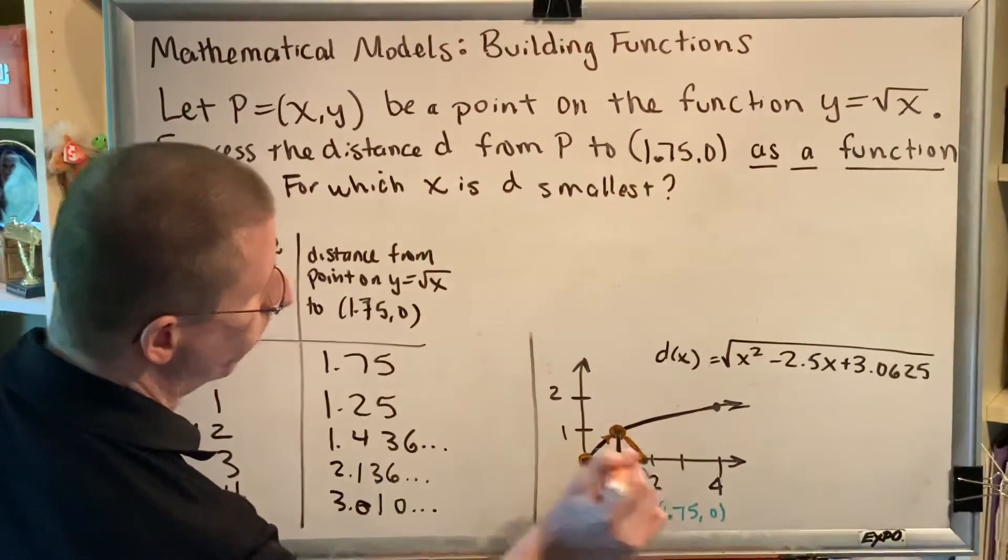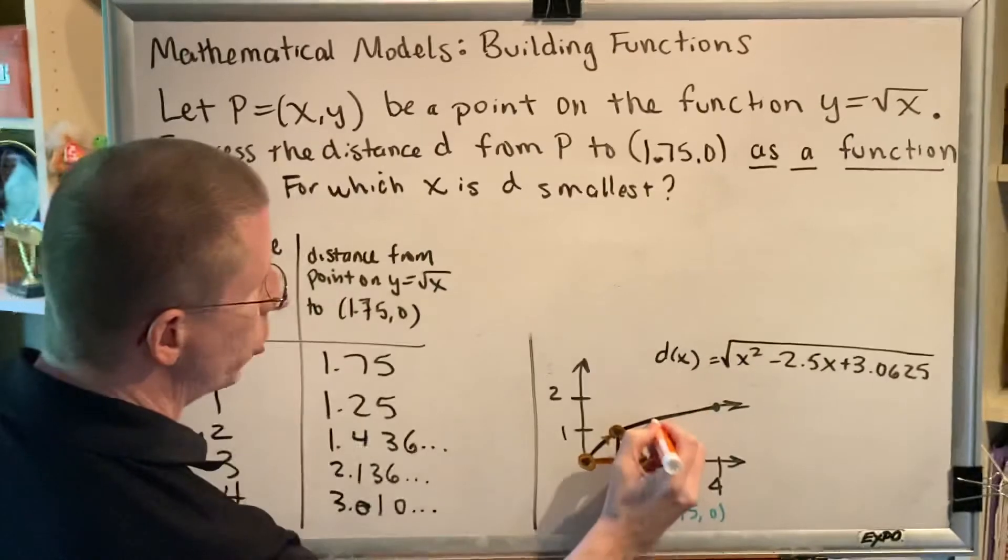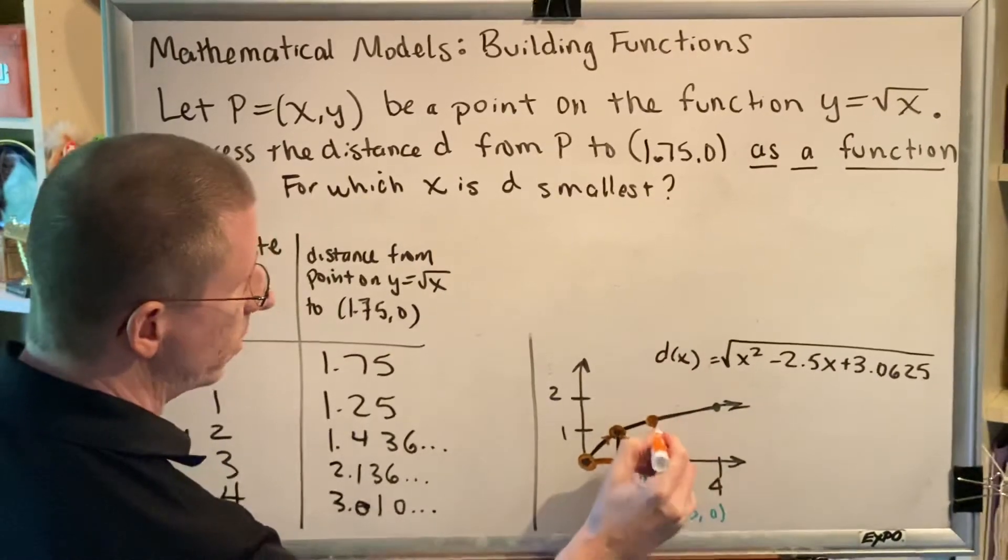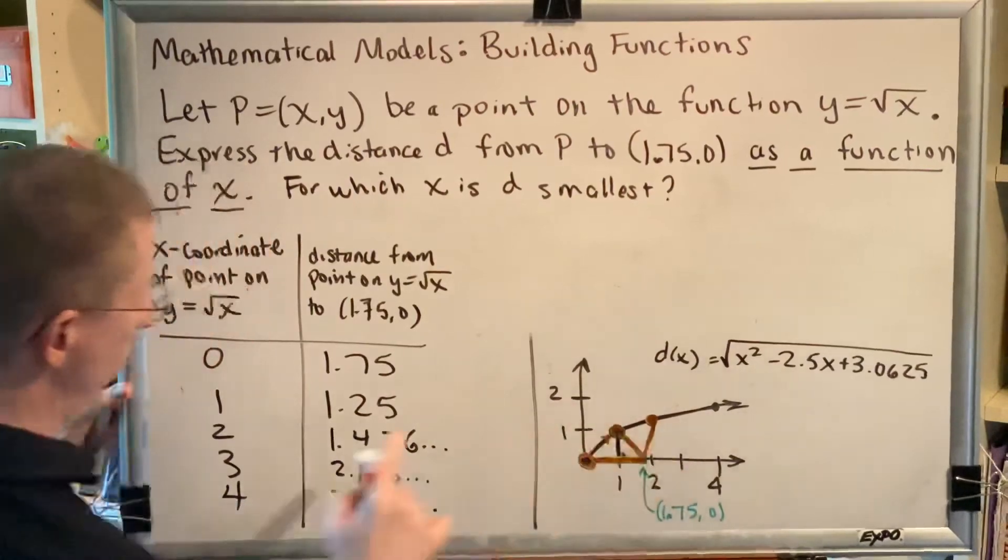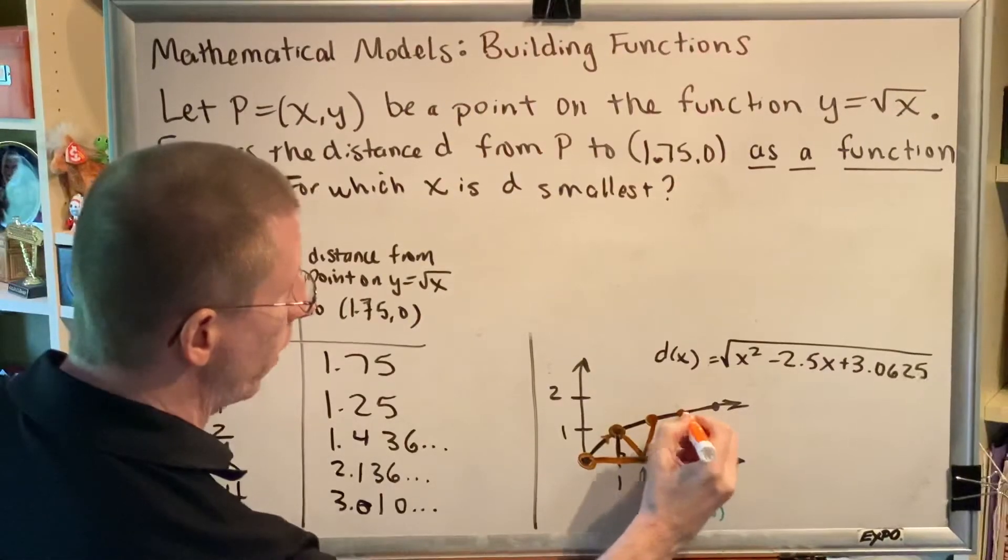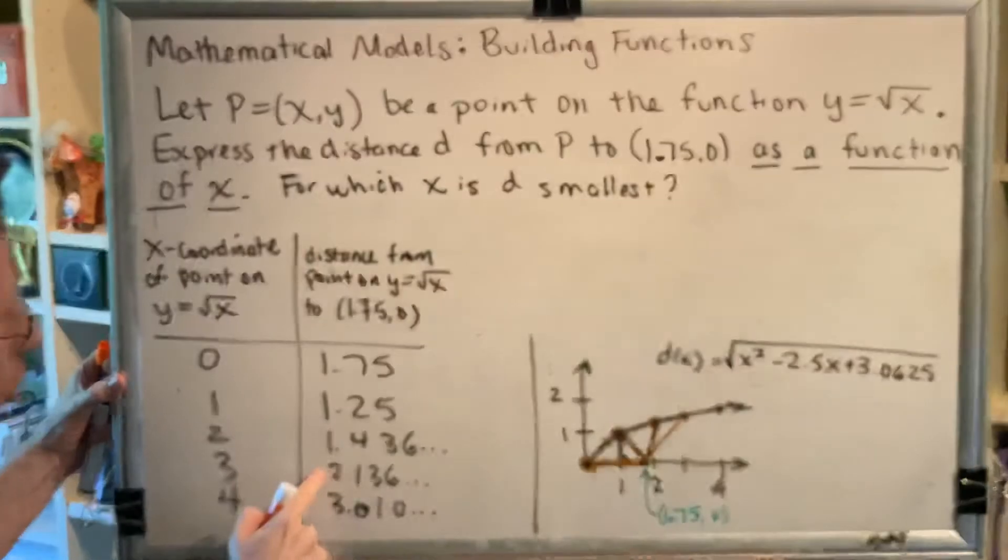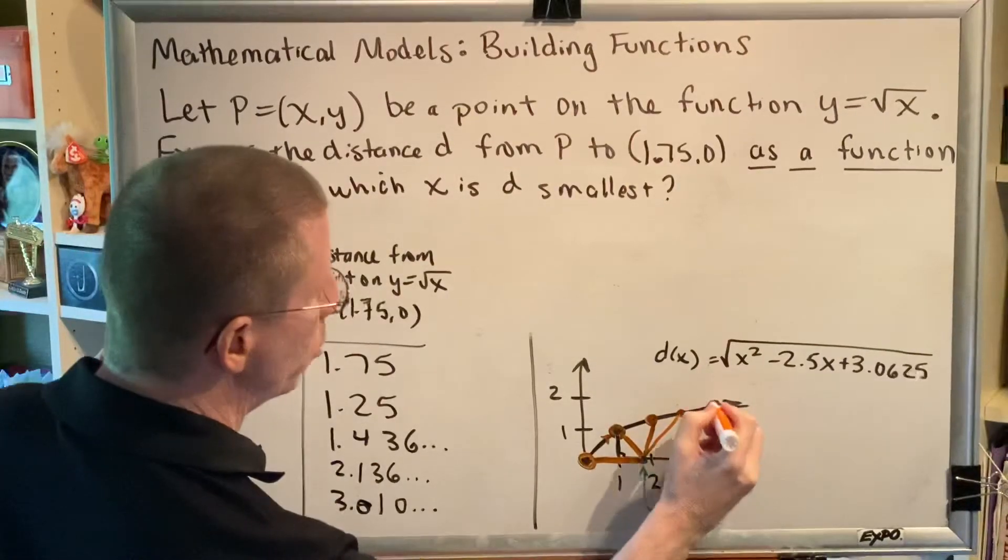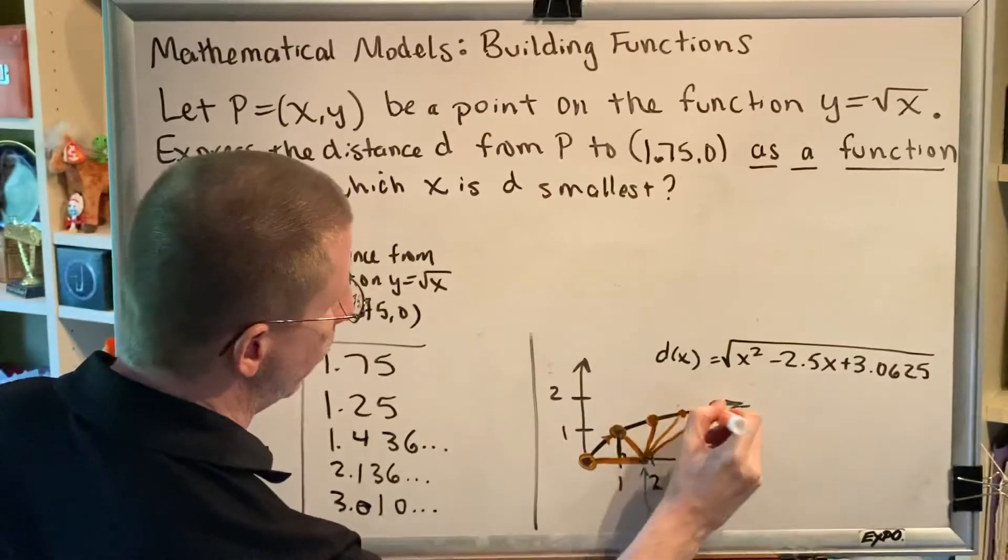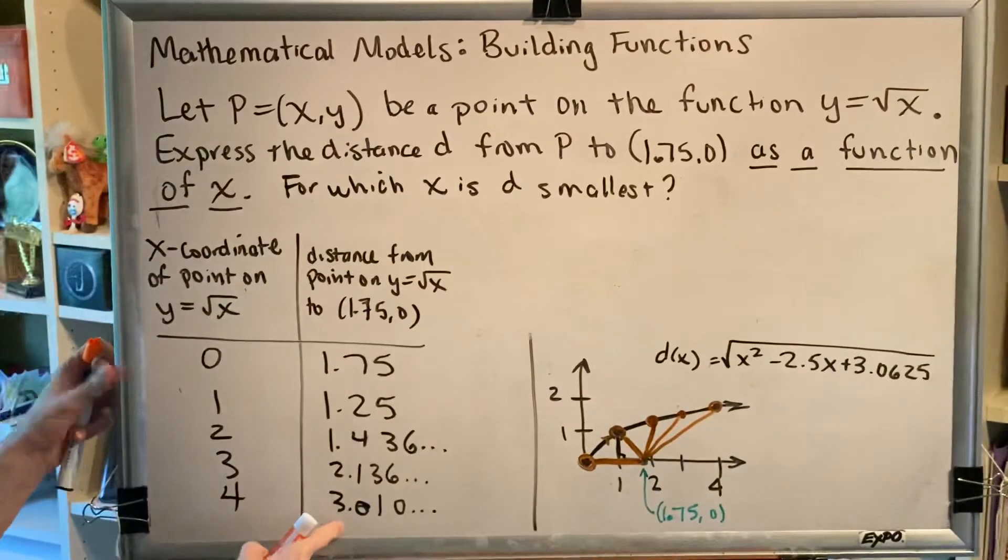Here the distance is 1.25. When it moves to this location, the distance is 1.435. Then when it moves to this location, you can see it's getting further away, the distance is 2.136. And when it moves to this location, it gets even further away, the distance is 3.010.